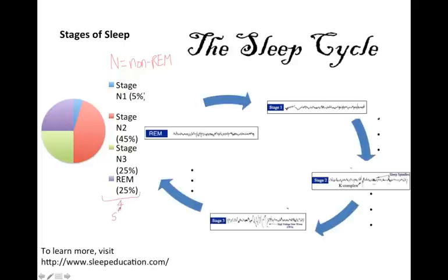We spend about 5% of our sleeping time in N1, which is the start of light sleep. This happens for the few minutes after we fall asleep, and this is the stage that your sleep-deprived friend, dozing off in class, is probably in.